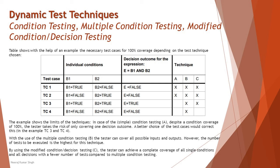With only two inputs the table is manageable, but with three inputs you get 2³ = 8 combinations, and with four inputs even more — creating increasingly large tables. So you need to be smart about it. By using modified condition decision testing, technique C, the tester can achieve complete coverage of all single conditions and all decisions with fewer tests compared to multiple condition testing, reducing the number of test cases needed.